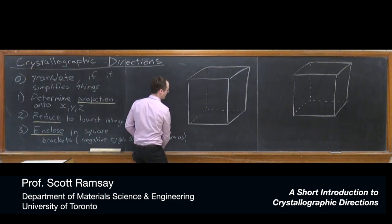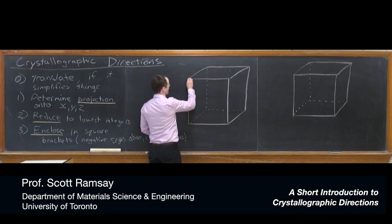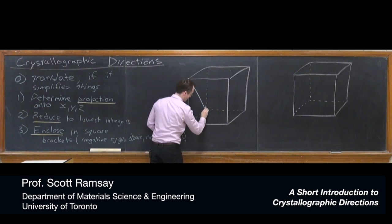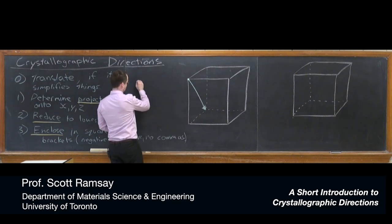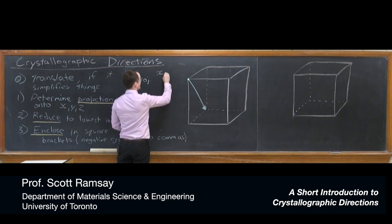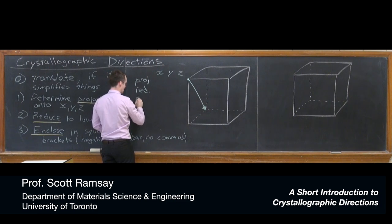So how about we start with a vector that originates here and travels down to there? So if we proceed systematically, we do projection onto the x, y, and z. We're going to do a reduction, if necessary, and then an enclosure.